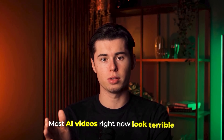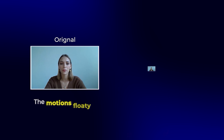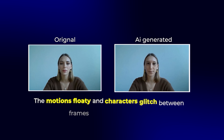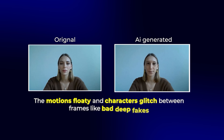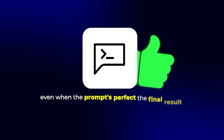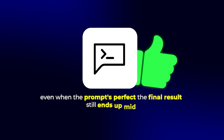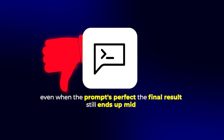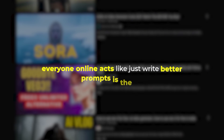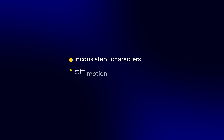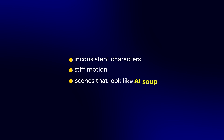Most AI videos right now look terrible. The motion's floaty and characters glitch between frames like bad deepfakes. And even when the prompt's perfect, the final result still ends up mid. And it's not your fault. Everyone online acts like 'just write better prompts' is the fix — like that's going to solve inconsistent characters, stiff motion, or scenes that look like AI soup.